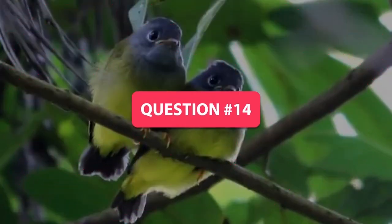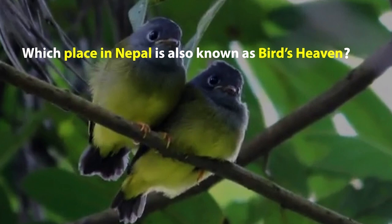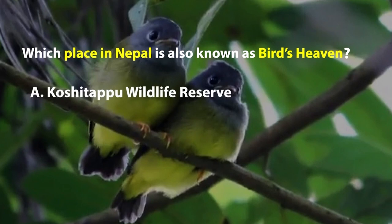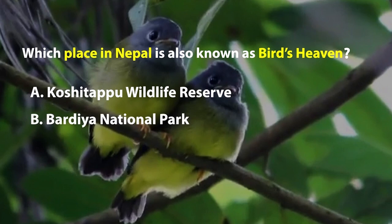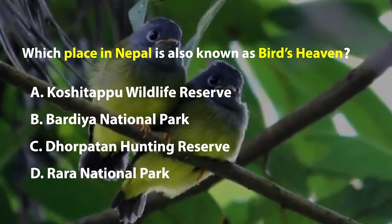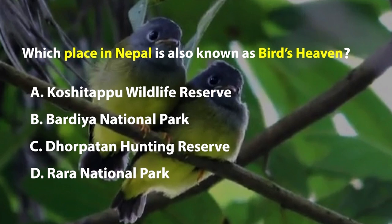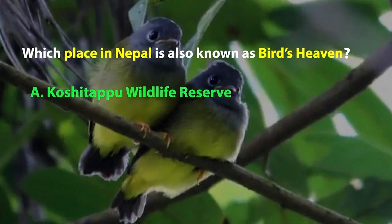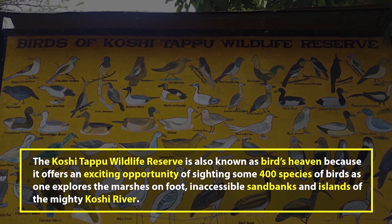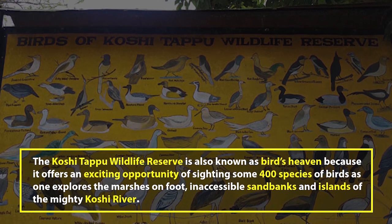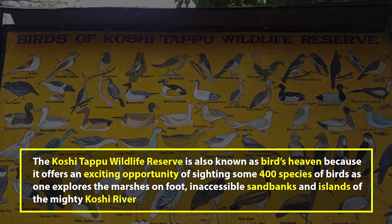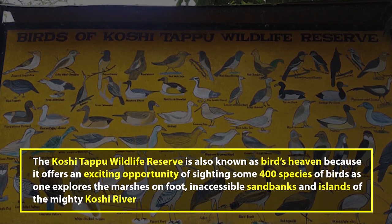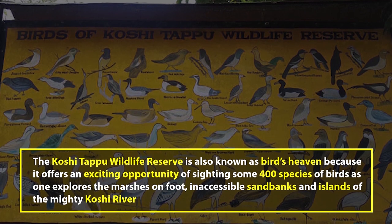Question number 14. Which place in Nepal is also known as Bird's Heaven? A. Koshi Tappu Wildlife Reserve, B. Bardiya National Park, C. Dhorpatan Hunting Reserve, or D. Rara National Park. The right answer is A. Koshi Tappu Wildlife Reserve is known as Bird's Heaven because it offers an exciting opportunity to sight some 400 species of birds as one explores the marshes on foot, accessible sandbanks and islands of the mighty Koshi river.